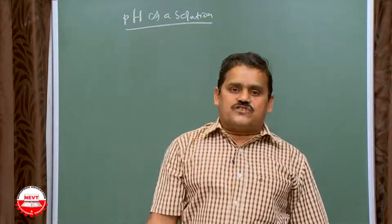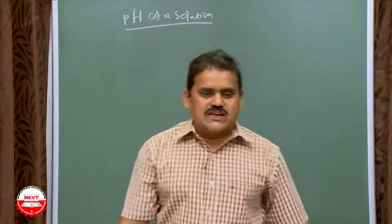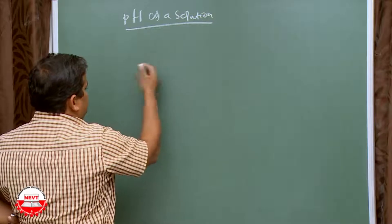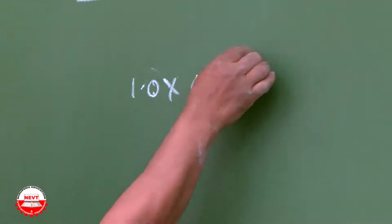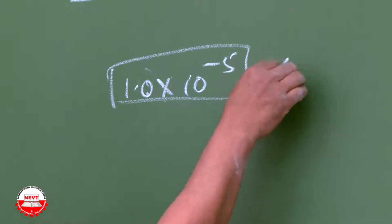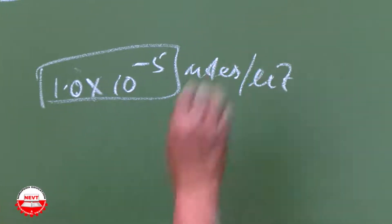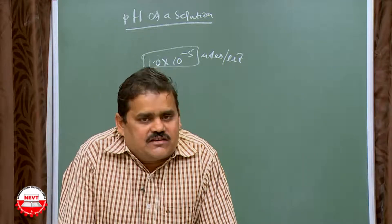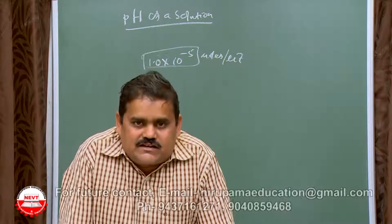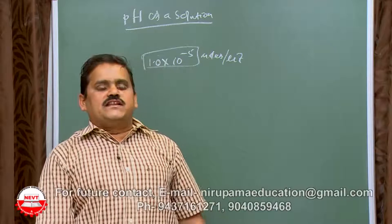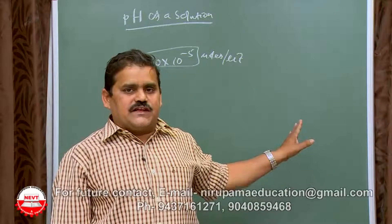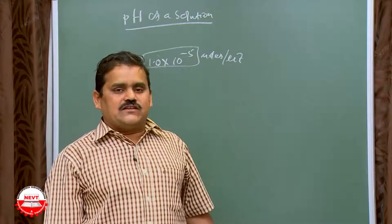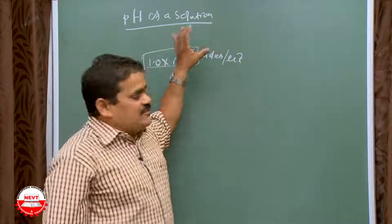This is how we calculate the pH of a solution, but this calculation is not in your syllabus. For example, if the hydronium ion concentration in a solution is 1.0 × 10⁻⁵ moles per liter, the pH is the negative logarithm of that concentration. Since concentration of any substance in a liquid is calculated in moles per liter, just write the definition for now.